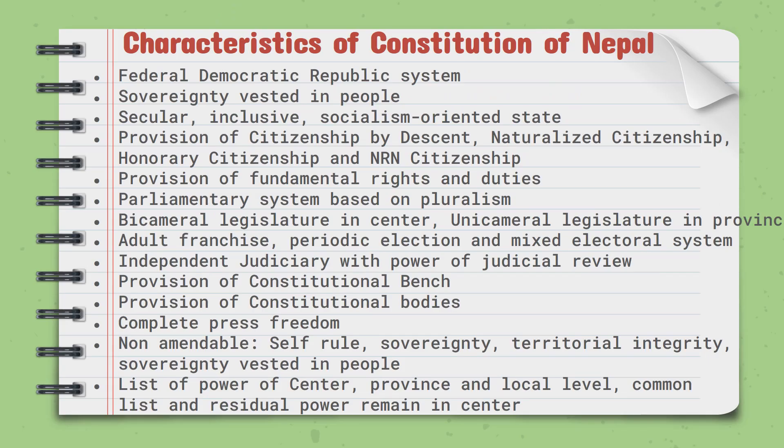As a constitution of a democratic country, our constitution carries fundamental characteristics of democracy and constitutionalism. Nepal is a federal-democratic-republican country, so the number one characteristic of the constitution is the federal-democratic-republican system. Other characteristics are: sovereignty vested in people, secular-inclusive socialism-oriented state, and provision of citizenship by descent, naturalized citizenship, honorary citizenship, and non-residential Nepali citizenship.